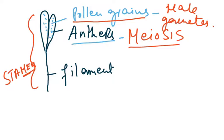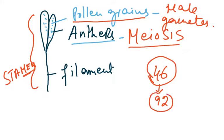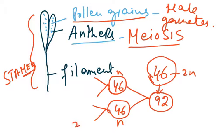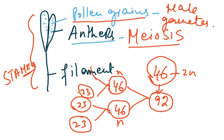Now a normal human cell has 46 chromosomes. First of all, DNA replication has to take place and they become 92 chromatids, and then 46 — but please remember this is not 2N. In this case it was 2N, but in this case this is N, and I'll tell you why. Then another division takes place and a cell is formed with 23 chromosomes. So now we have 4 cells with 23 chromosomes.